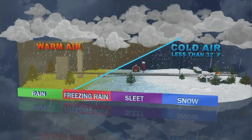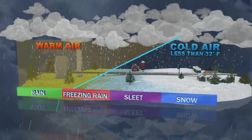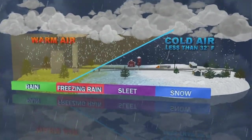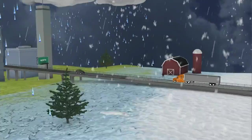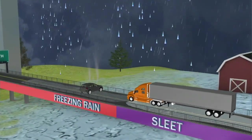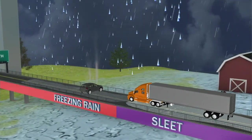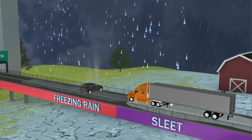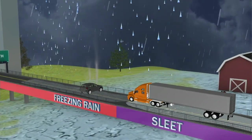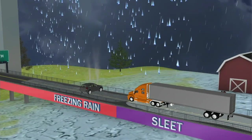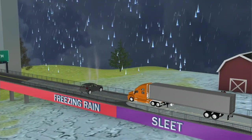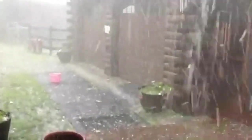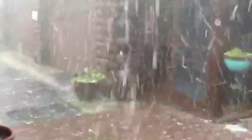But what about the in-betweens? Freezing rain and sleet are commonly confused for one another, but there are differences between the two. Think of little ice pellets bouncing off your car windshield — that's sleet. Sleet is also sometimes thought to be hail. While sleet occurs in the winter months, hail occurs during the warm season and is often associated with severe weather events, such as thunderstorms.